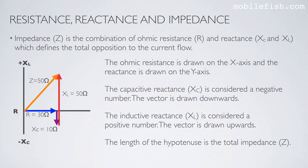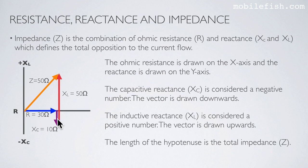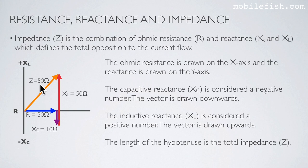The impedance can be graphically represented as follows. The ohmic resistance is drawn on the x-axis and the reactance on the y-axis. The capacitive reactance is considered a negative number and is drawn downwards, while the inductive reactance is a positive number drawn upwards. Starting from the ohmic resistance — in this case 30 ohms — then the capacitive reactance, followed by the inductive reactance, the length of the hypotenuse is the total impedance, which is 50 ohms in this example.